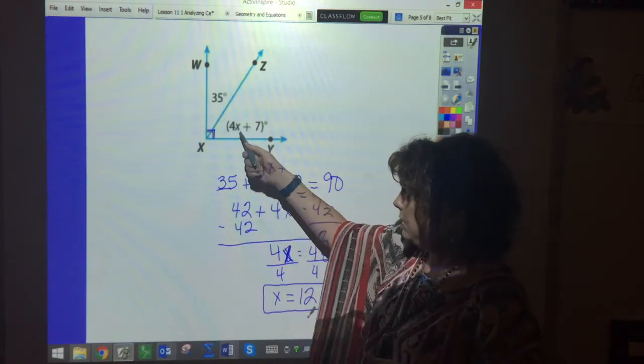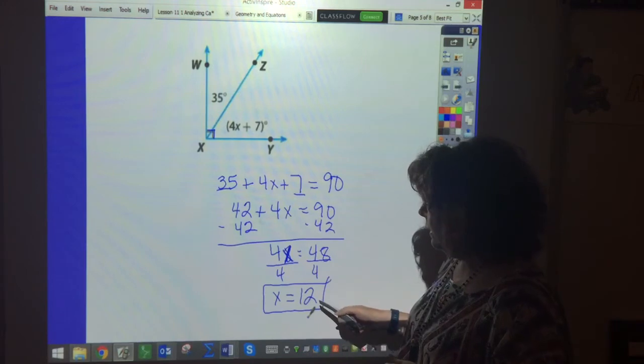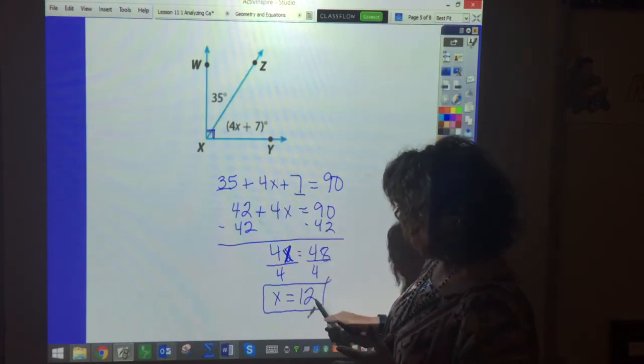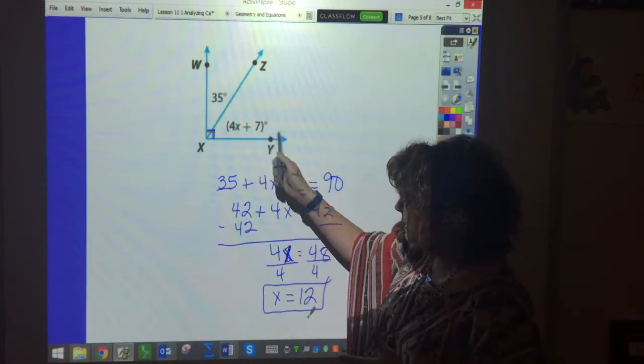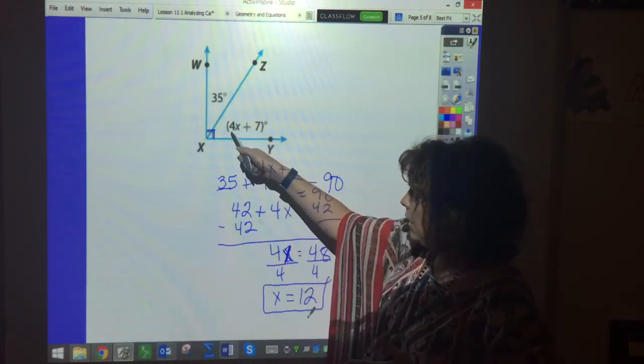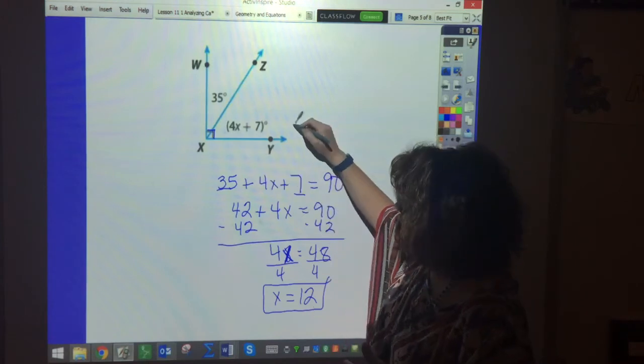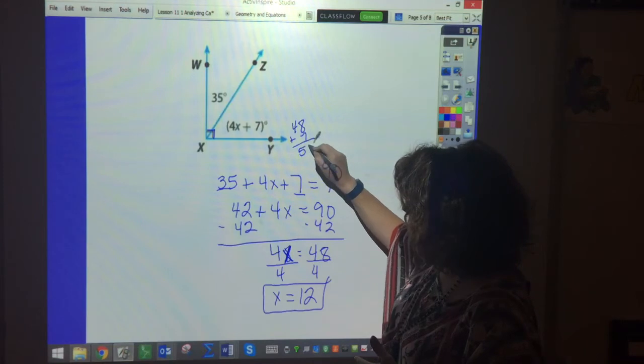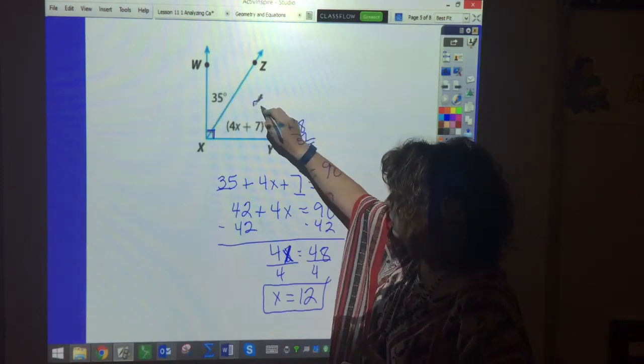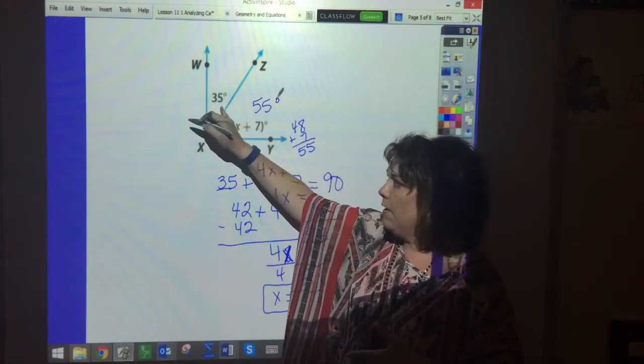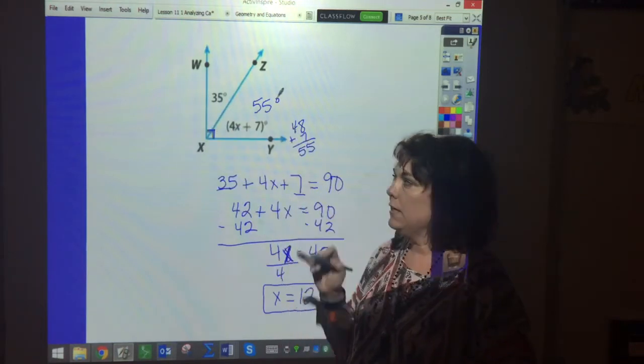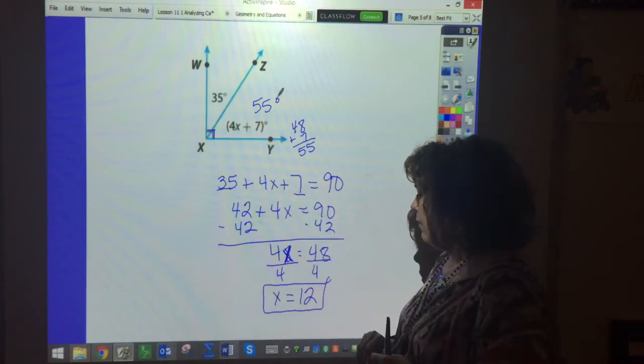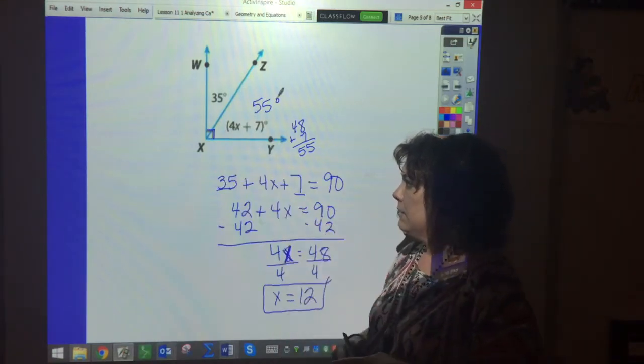Now I have to substitute this back in and it's going to be 48, right? Nope. 48 plus 7. 12 times 4 is 48. Oops. Plus 7 is 55. So this is 55. And that makes sense because 55 plus 35 is 90. So that would be an easy question to answer would be the 55. But what is X? X is here.